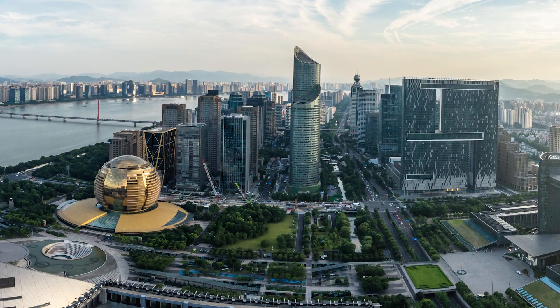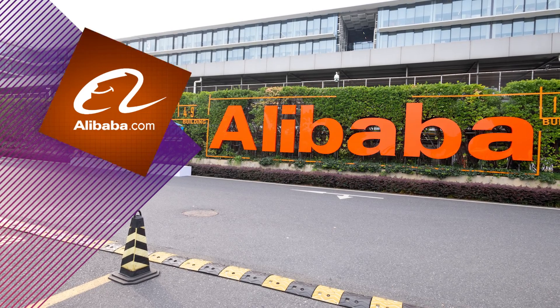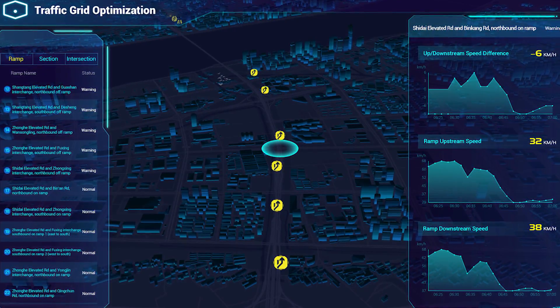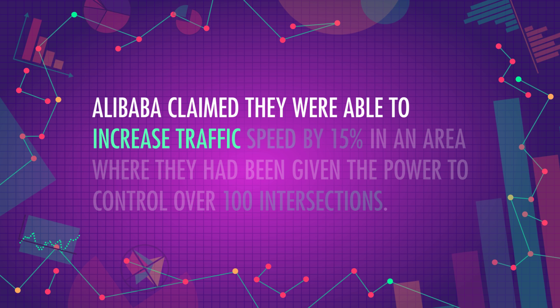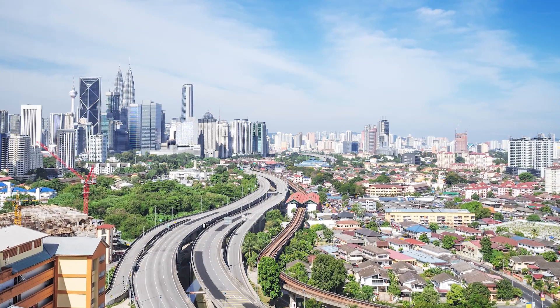Google Maps also keeps track of your personal history, which is how it can prepare you for your specific morning commute. The system CityBrain, implemented in Hangzhou, China starting in 2016, takes this concept one step further. The goal of CityBrain is to minimize traffic in the city. Unlike Google Maps, it's run by a huge retailer called Alibaba, with the help of local government as well. The CityBrain AI system gets data in ways similar to Google Maps, but also has access to information from the transportation bureau and city surveillance cameras. Alibaba claimed they were able to increase traffic speed by 15% in an area where they had been given the power to control over 100 intersections. The city also uses this information to see where accidents have occurred, get directions for emergency vehicles, and determine areas needing infrastructure changes. In 2018, CityBrain was announced to be implemented in a second city, Kuala Lumpur, Malaysia.